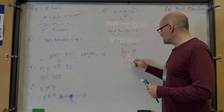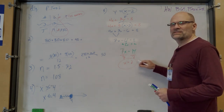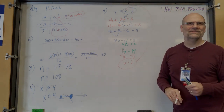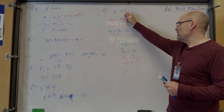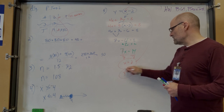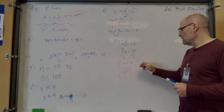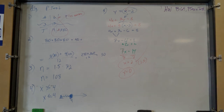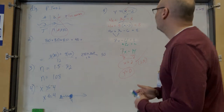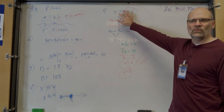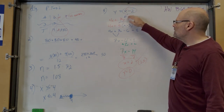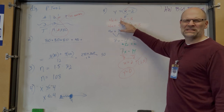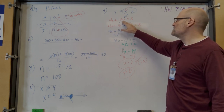Great job, but you're not done — you still need to solve for y. Now that x equals 2, substitute: y equals x minus 2, so y equals 2 minus 2, which is 0. Your answer is x equals 2, y equals 0. You can verify: 4 times 2 is 8, plus 3 times 0 is 0, and 8 plus 0 equals 8. It works.